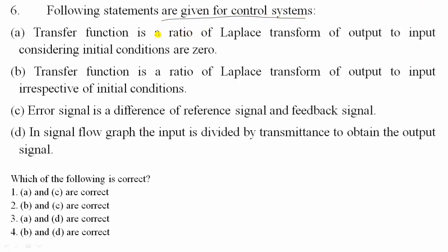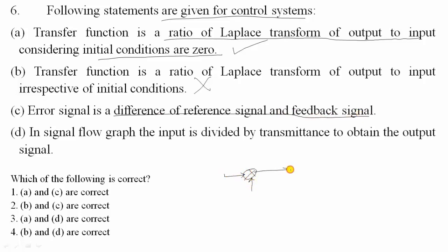Question 6: Statements about transfer function. Statement A: it is the ratio of Laplace transform of output to Laplace transform of input with initial conditions zero — this is true. Statement C: error signal is the difference of reference signal and feedback signal — this is also correct. Statement about signal flow graph saying input is divided is wrong. So statements A and C are correct — option 1 is correct.